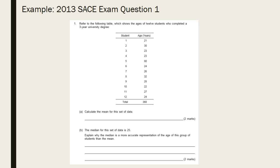In part B, it then goes on to tell you that the median for this set of data is 25 and you need to explain why the median is a more accurate representation. Hopefully when you looked at the table, you would notice that there is an outlier present. Student 5 is 80 years old. So despite the fact that most of the students are actually in their mid-20s, that outlier has skewed the mean upwards, giving us a mean of 30. Therefore, because of the presence of that outlier, the median 25 is a more accurate representation of the age group.